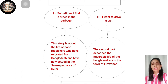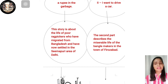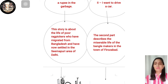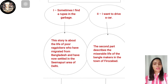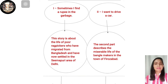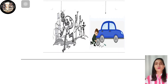The first story is about the life of a poor rag picker who has migrated from Bangladesh and settled in the Seemapuri area of Delhi. The second story, 'I Want to Drive a Car', describes the miserable life of the bangle makers in the town of Firozabad. The main character of the second part is Mukesh.